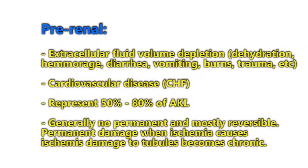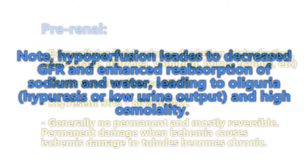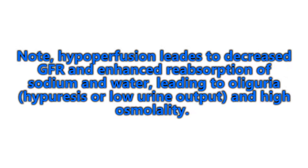Generally there is no permanent damage and it is mostly reversible — that's why it's an acute injury and not a chronic injury. It's reversible if the problem is corrected. Permanent damage occurs when ischemia causes ischemic damage to the tubules, which can become chronic kidney disease. Hyperperfusion leads to decreased GFR, which activates the renin-angiotensin-aldosterone system, causing enhanced reabsorption of sodium and water, leading to oliguria and high urine osmolality and low urine sodium.